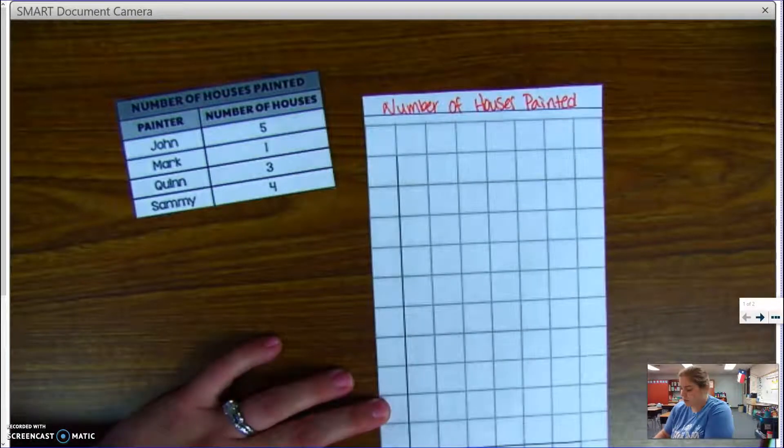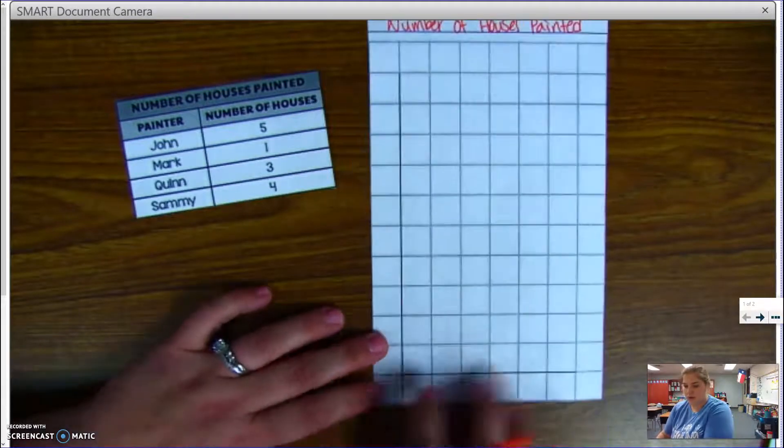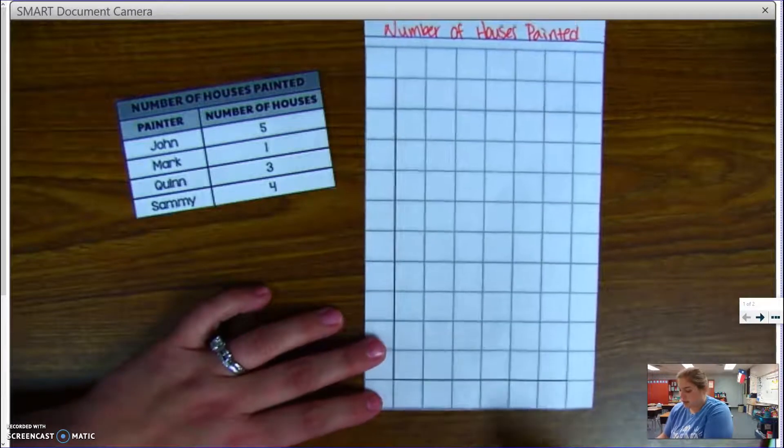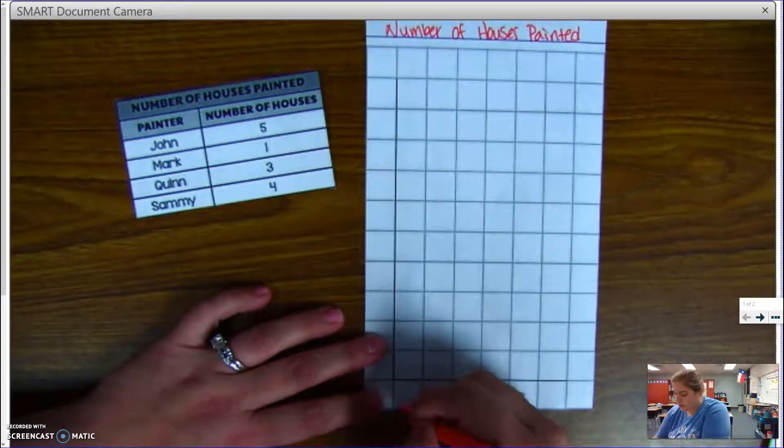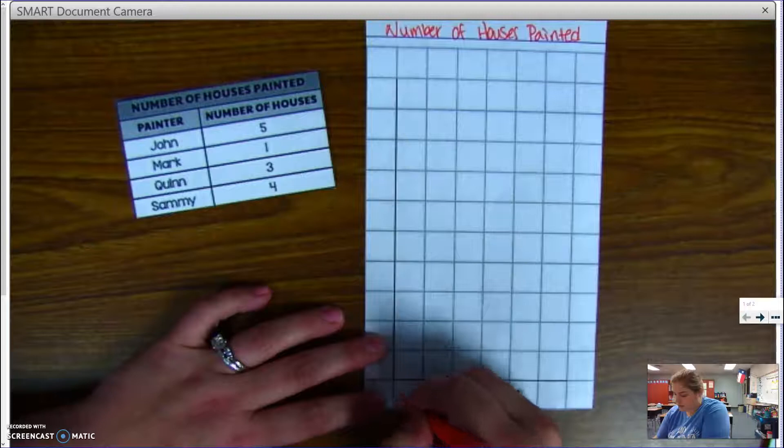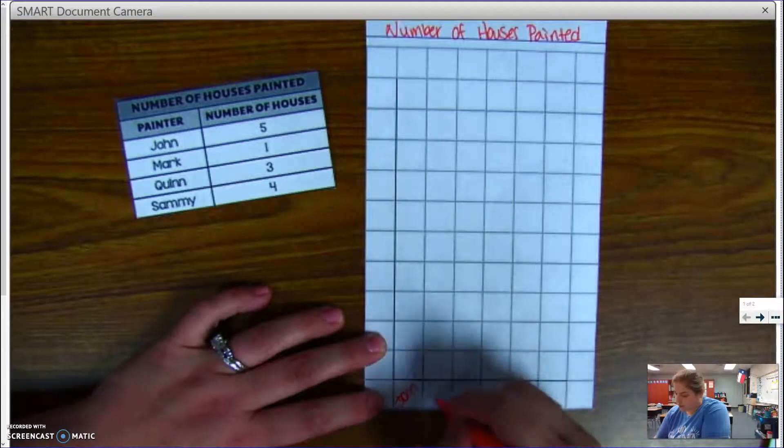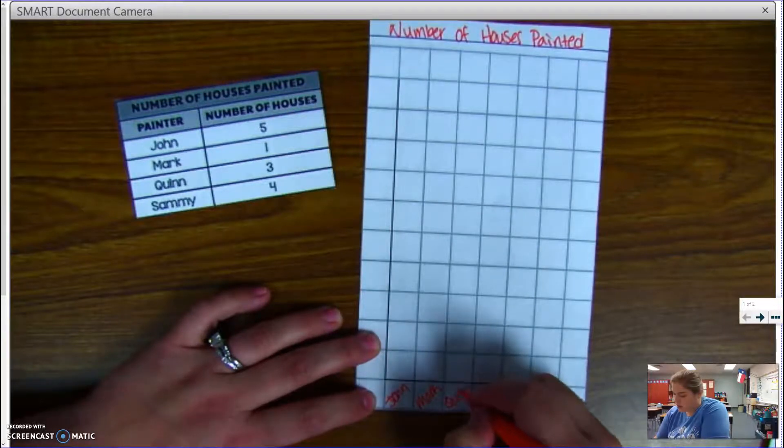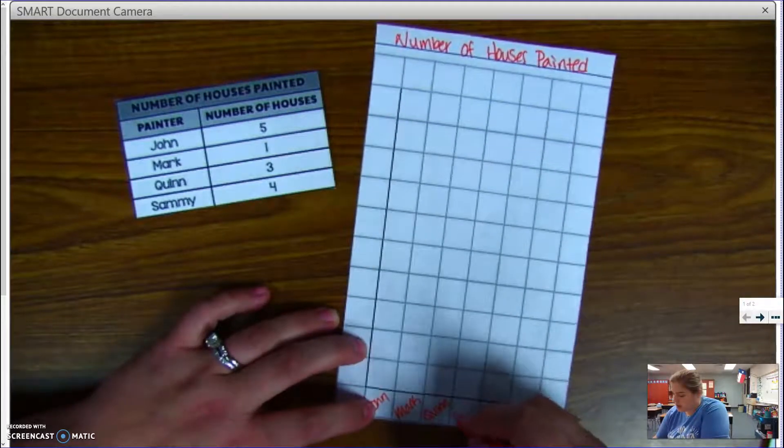My categories go across the bottom on a vertical bar graph, they go across the bottom. So I would have John, then Mark, then Quinn, and then Sammy.